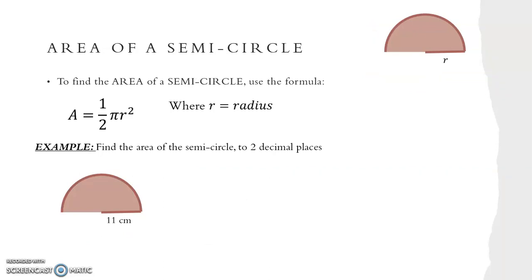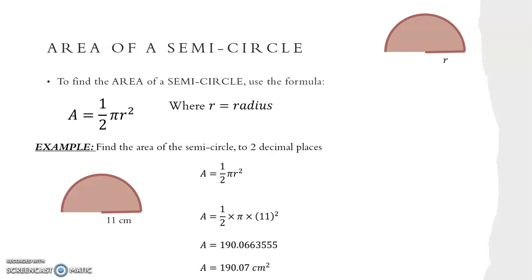To find the area of a semicircle we use the formula A equals a half pi R squared, where R equals the radius. The relationship between the semicircle formula and the circle formula is that there is just a half at the front because the semicircle is half of the circle. To find the area to two decimal places, we write out our formula A equals a half pi R squared and substitute in our radius of 11. So A equals a half times pi times 11 squared. We put this into our calculator and get A equals 190.0663555, which rounds to two decimal places as A equals 190.07 centimetres squared.